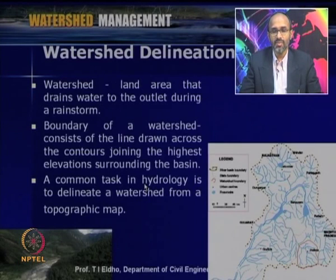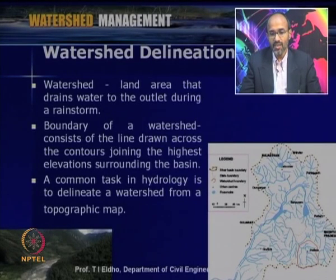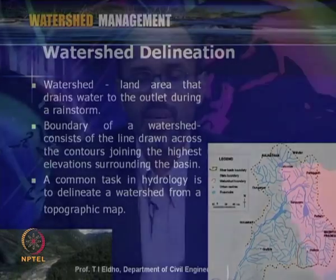A common task in hydrology and watershed management is to delineate a watershed from a topographic map. A topographic map, or toposheet, will be available for a given location. We have to identify which is our watershed, what is the boundary of the watershed, and then only we go for various management measures or watershed modeling. Watershed delineation with topographic maps is very important — topographic maps give most of the important information which is the starting point for watershed delineation.